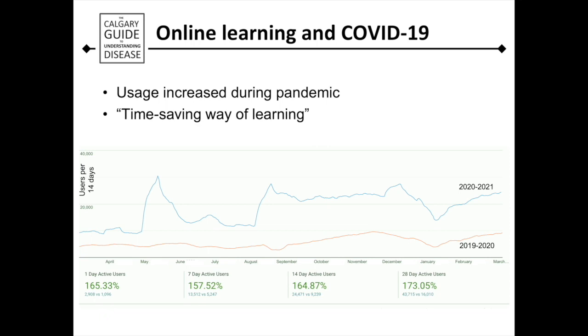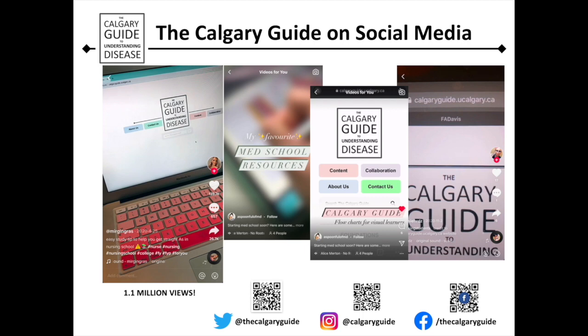You can see that users per 14 days more than doubled from the same period in 2019 versus the same period in 2020. These peaks actually corresponded to social media shares of our resource, which we didn't pay for and didn't market at all — none of the widespread use of the Calgary Guide so far has been because of any marketing on our part. This is just a series of photos and screenshots showing the social media that's been promoting our work, and cheers to these social media influencers for helping us share our work with others.